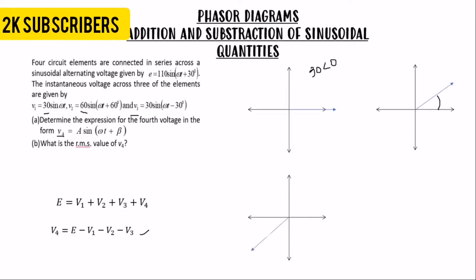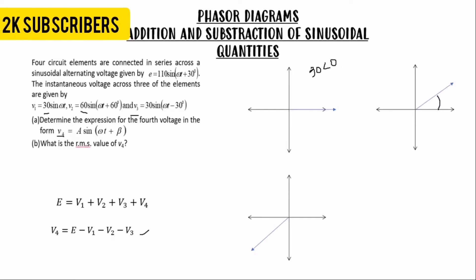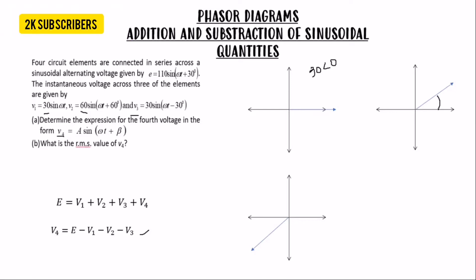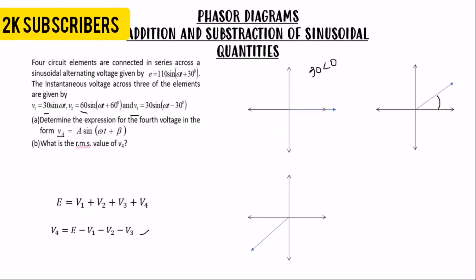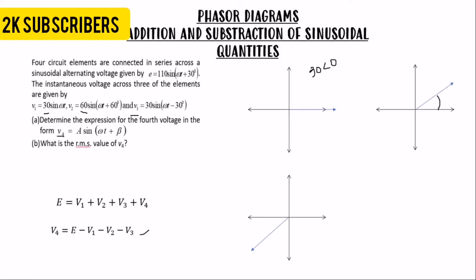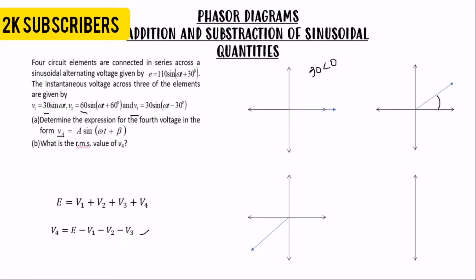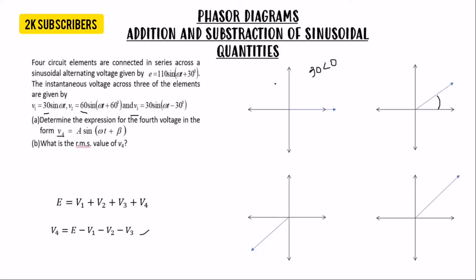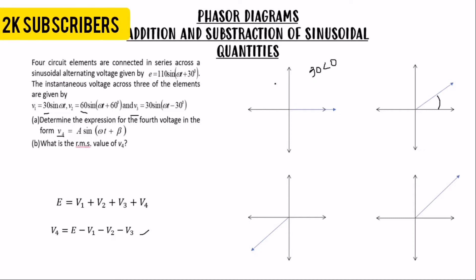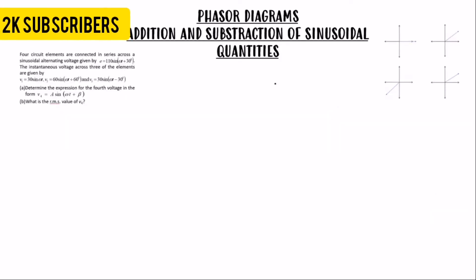For V3, the angle is negative, so it is on the negative side. Converting it gives x = −30 cos(−30°). Note that cosine is an even function, so cos(−30°) = cos(30°). However, sine is an odd function, so sin(−30°) ≠ sin(30°). For the source e, which is positive, the components are x = 110 cos(30°) and y = 110 sin(30°).